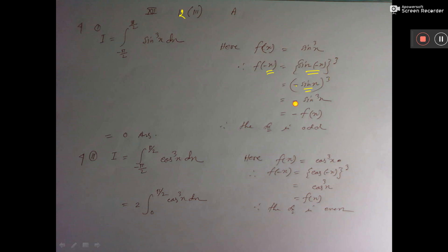And minus whole cube means minus. Sin cube x value is f(x). So we have got f minus x equal to minus f(x). Therefore the function is odd. You know this. How to test you have learned in class 11.